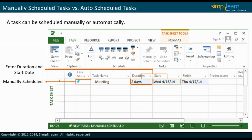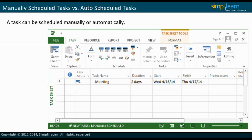Manually scheduled tasks can be used when a task has specific requirements with respect to dates. You can manually schedule tasks in order to accomplish the date-specific requirements and later switch to the auto-schedule.